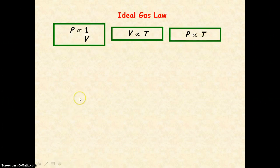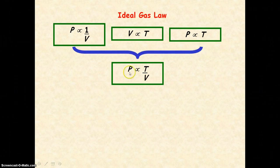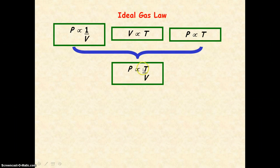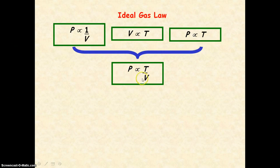If we combine these three laws together, we get that the pressure is directly proportional to the temperature divided by the volume. You can see that if temperature is kept constant, then pressure is inversely proportional to volume. If volume is kept constant, pressure is directly proportional to temperature. And if pressure is kept constant, then bringing V across, the volume is proportional to the temperature. This is true for a fixed mass of gas.